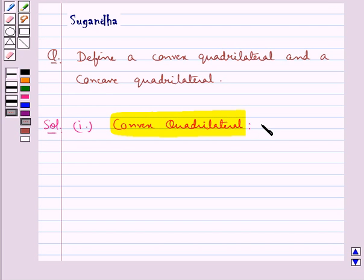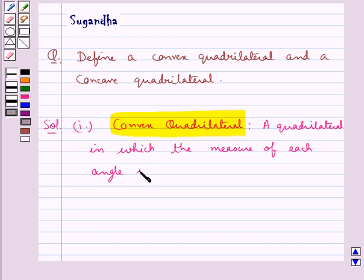This is a quadrilateral in which the measure of each angle is less than 180 degrees.